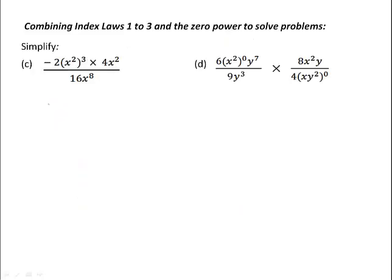If there are any brackets in expressions, it's recommended that these be removed first before applying any other index laws. We can see here that we have x squared raised to the power 3. When we have a term already raised to a power and we raise it to a power again, we multiply the powers. So the numerator becomes negative 2, x to the power 2 times 3 or x to the power 6, times 4x squared, and we divide that by 16x to the power 8.